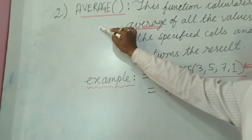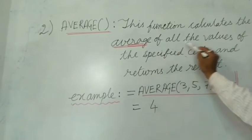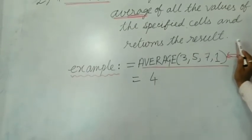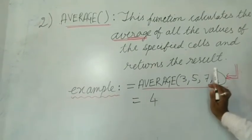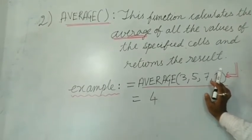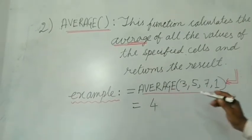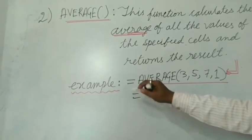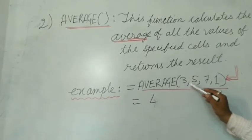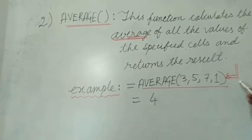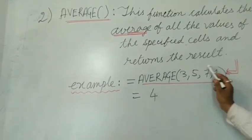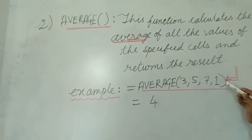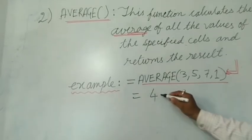The second function is AVERAGE. This function calculates the average of all the values of the specified cells and returns the result. It can calculate the average of a row or a column. For example: =AVERAGE(3,5,7,1). MS Excel will add the numbers and divide by 4 (since there are four numbers), so the sum 16 divided by 4 gives the answer 4.